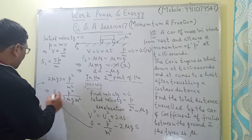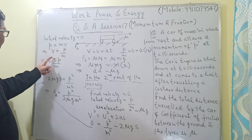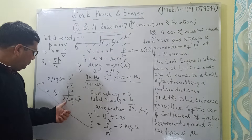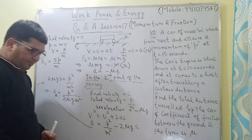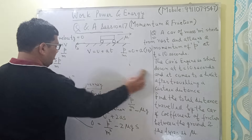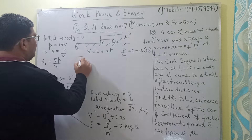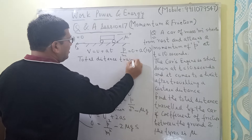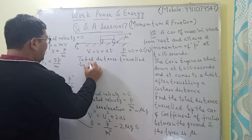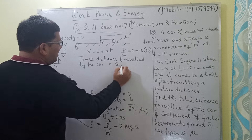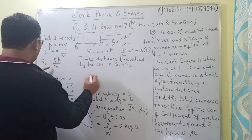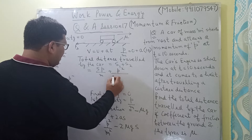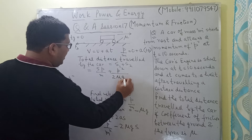So S2, the distance in the second part, equals P squared divided by 2 mu g M squared. In the first part of the journey, the distance S1 was equal to 5P upon M, and in the second part S2 equals P squared divided by 2 mu g M squared. The total distance travelled by the car is S1 plus S2, which equals 5P upon M plus P squared divided by 2 mu g M squared.